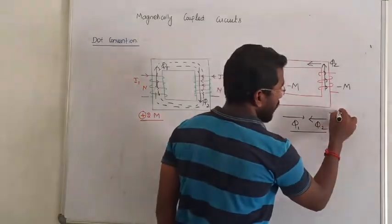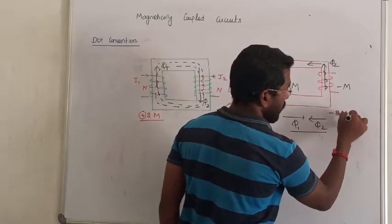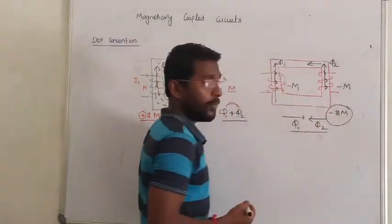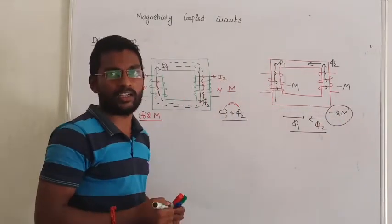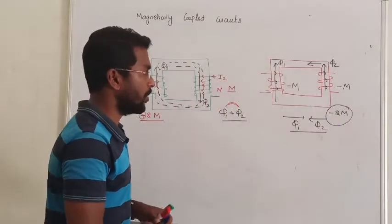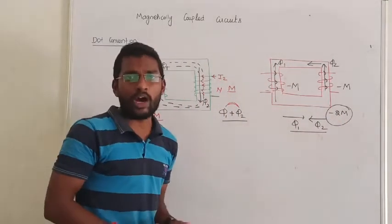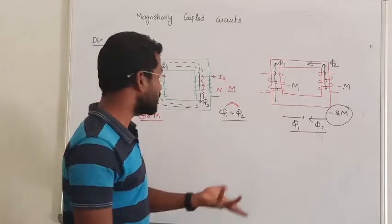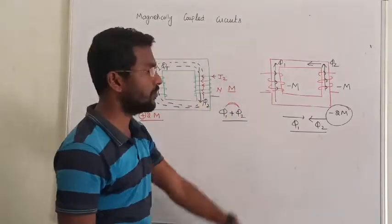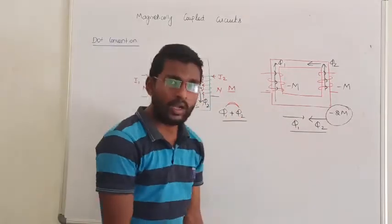When the fluxes oppose each other, you will get minus 2M. The mutual inductance becomes negative. We have to pay attention to the direction of the flux to determine the sign of the mutual inductance.